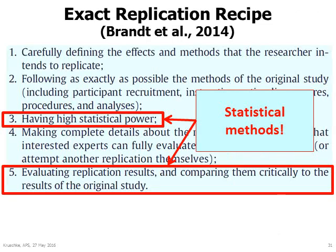So far I've talked about the fifth ingredient in the exact replication recipe — that is, evaluating replication results. Now let's move to the third ingredient: having high statistical power.